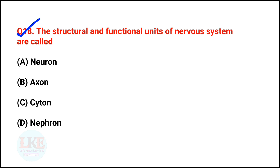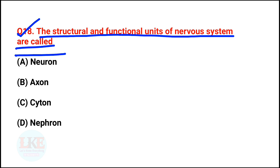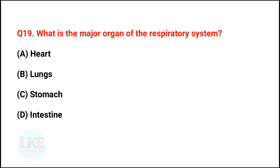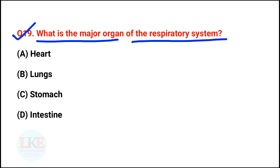Question number 18: the structural and functional unit of the nervous system is called the neuron. Question number 19: what is the major organ of the respiratory system? A) Heart, B) Lungs, C) Stomach, D) Intestine. The right answer is option B — lungs.